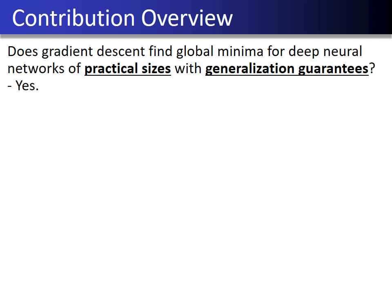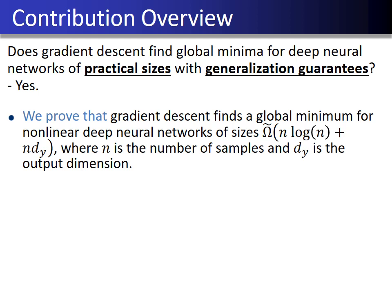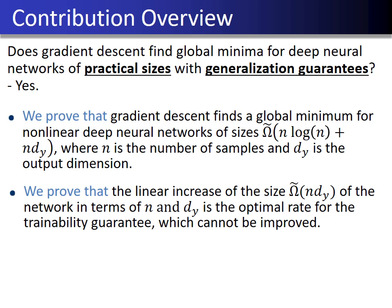One of the contributions of this paper is to prove that the answer is yes. More concretely, this paper proves the following statements. First, we prove that gradient descent finds a global minimum for non-linear deep neural networks of practical sizes, where n is the number of samples and d_y is the output dimension. In terms of the sizes of the neural networks, this theoretical result is consistent with practical observations. Second, we prove that the linear increase of the network size in terms of n and d_y is already the optimal rate for the trainability guarantee, and it cannot be improved further except by a logarithmic factor.